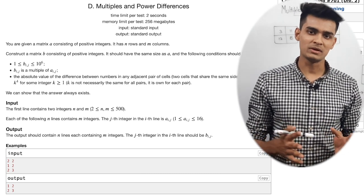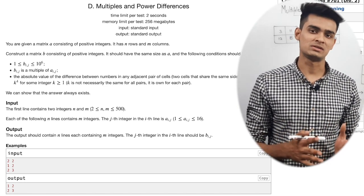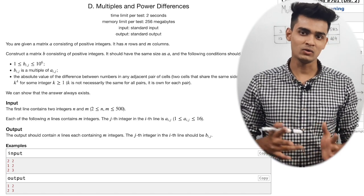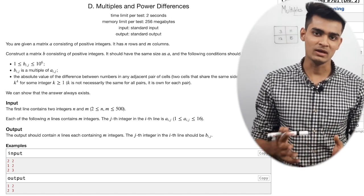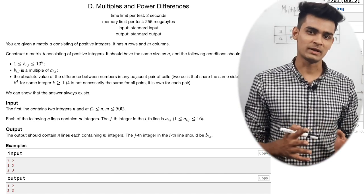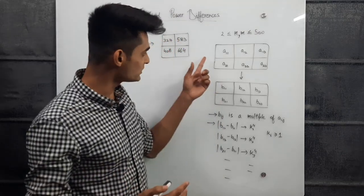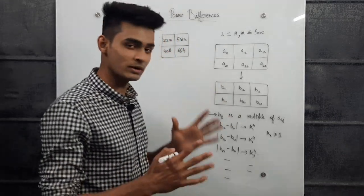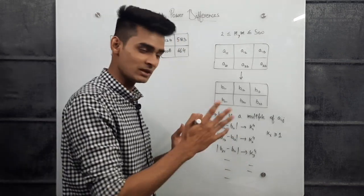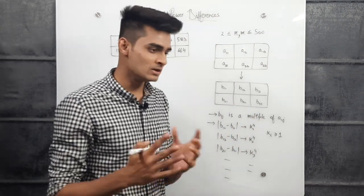The problem says we are given a matrix A of size n×m, where every element is denoted by a_ij. We need to find another matrix B of size n×m such that b_ij is a multiple of a_ij, and the absolute difference between any adjacent elements in the new matrix is of the form k^4 for some k. This k can be different for every pair.